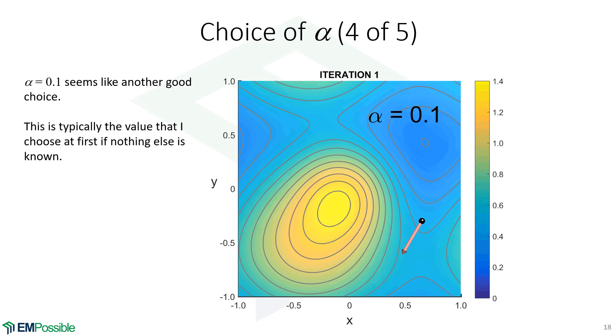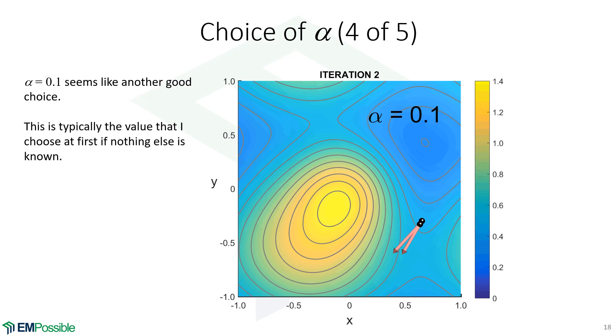What if we pick something smaller? Let's pick a value of 0.1. And I'll admit, when I first start a method and I don't know what value to pick for alpha, I'll just try 0.1 first. It usually does work, although it's usually a bit slower than other choices of alpha. And there really is no way to know that value of alpha ahead of time. We have to just play with it.